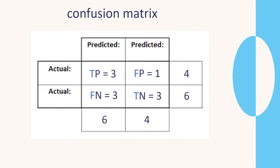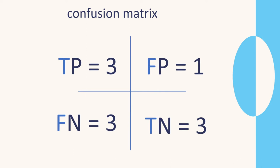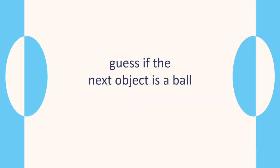A confusion matrix has predicted results compared to actual results. The format might be different sometimes, but inside we have true positive, false positives, true negatives, and false negatives. Now what do they mean? Let's have a look with an example.